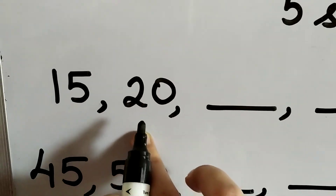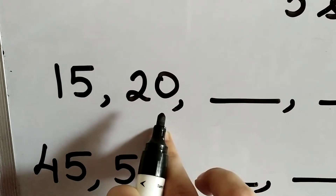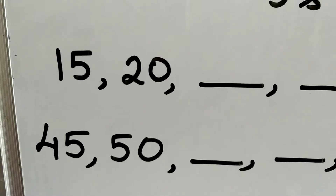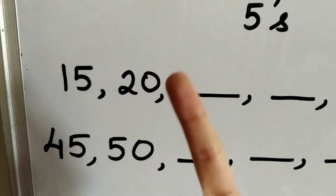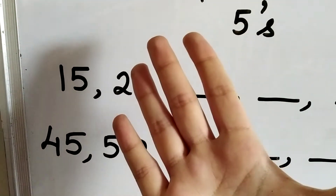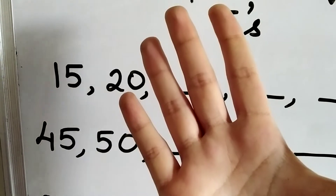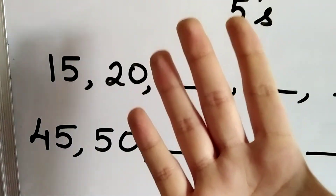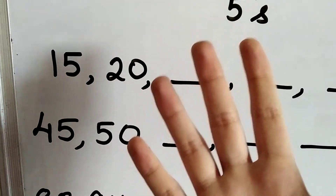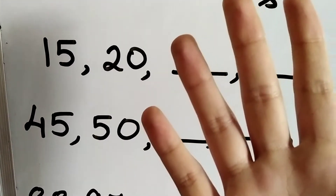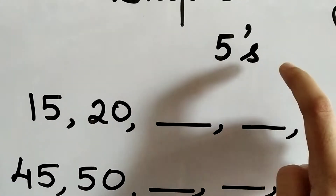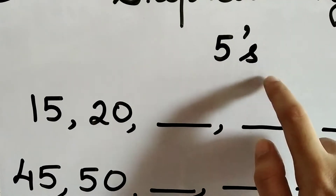So if there is 15 and then there is 20, let us count from 15 to 20: 15, 16, 17, 18, 19, 20. So there is a gap of how many numbers? There is a gap of 5 numbers. That means this question belongs to skip counting in fives.